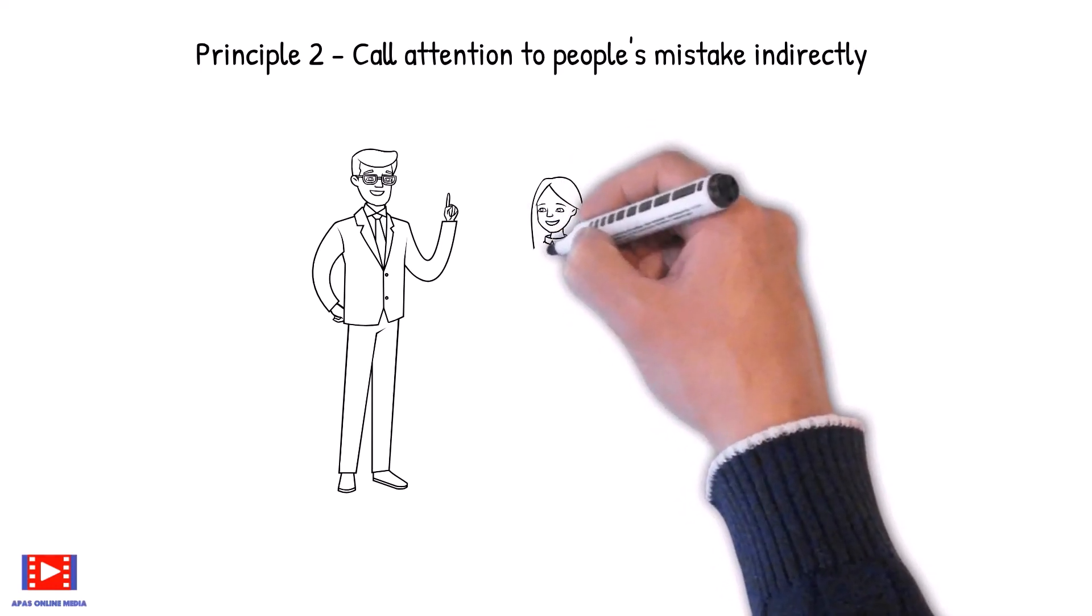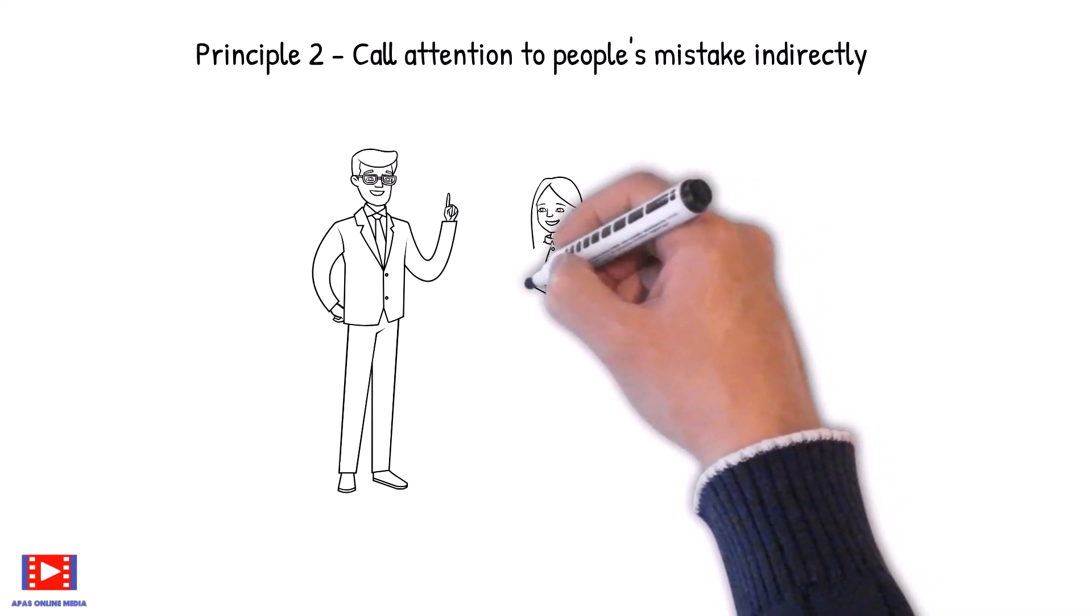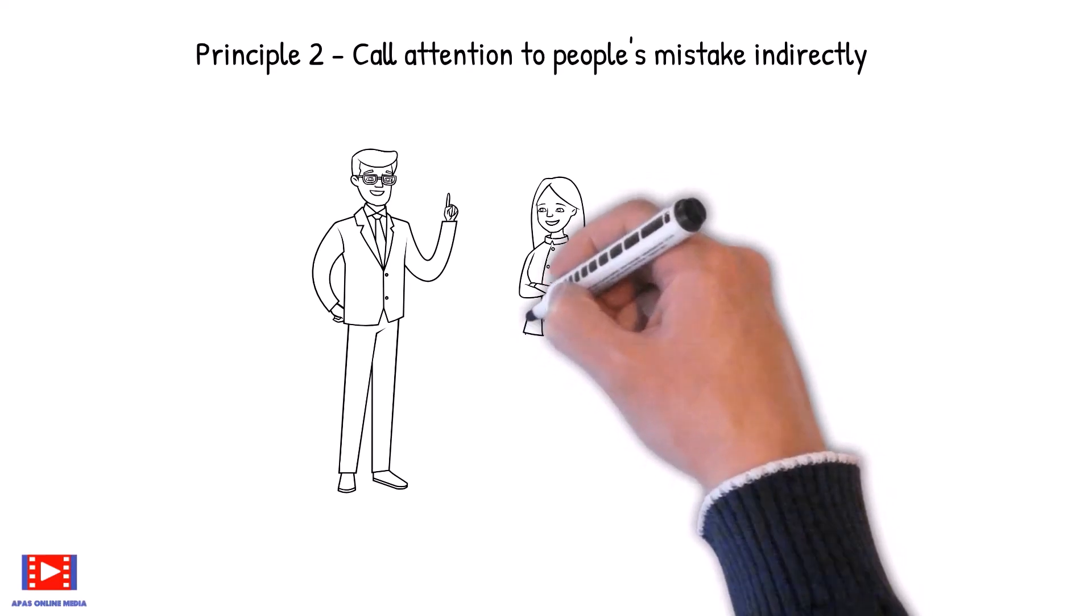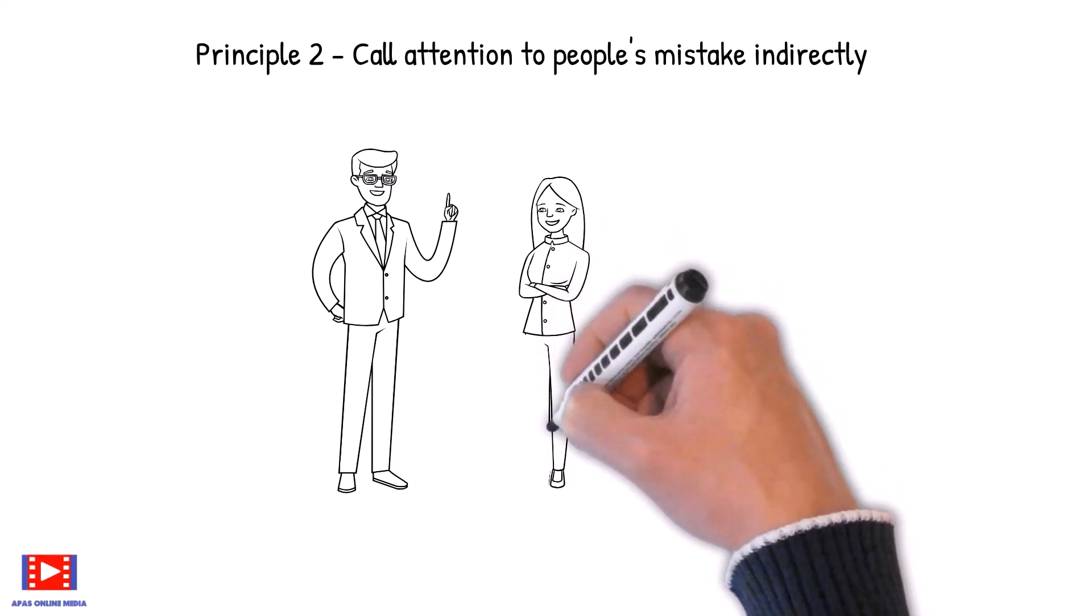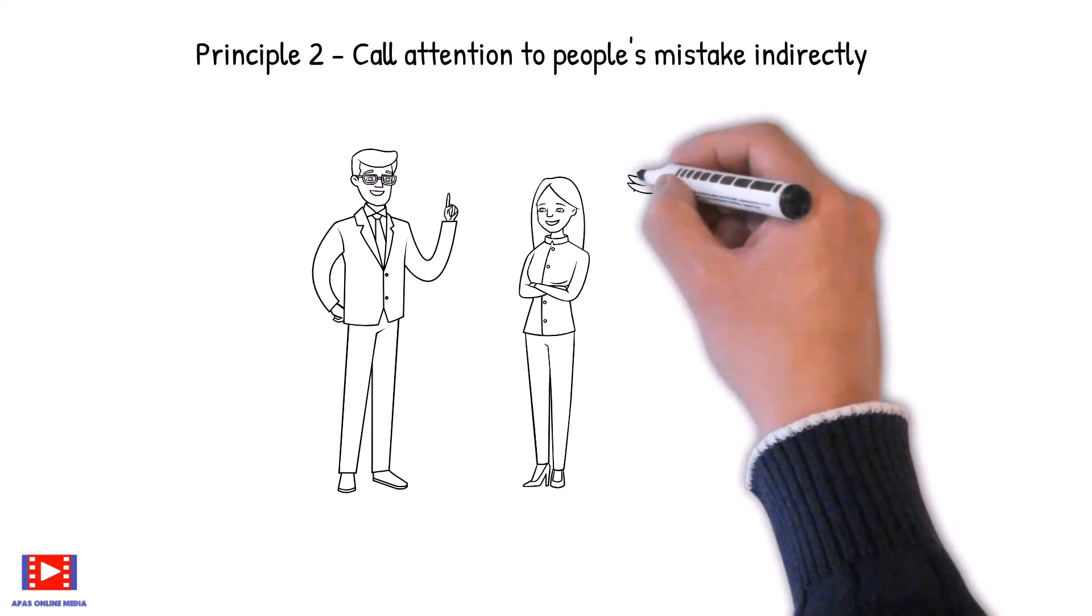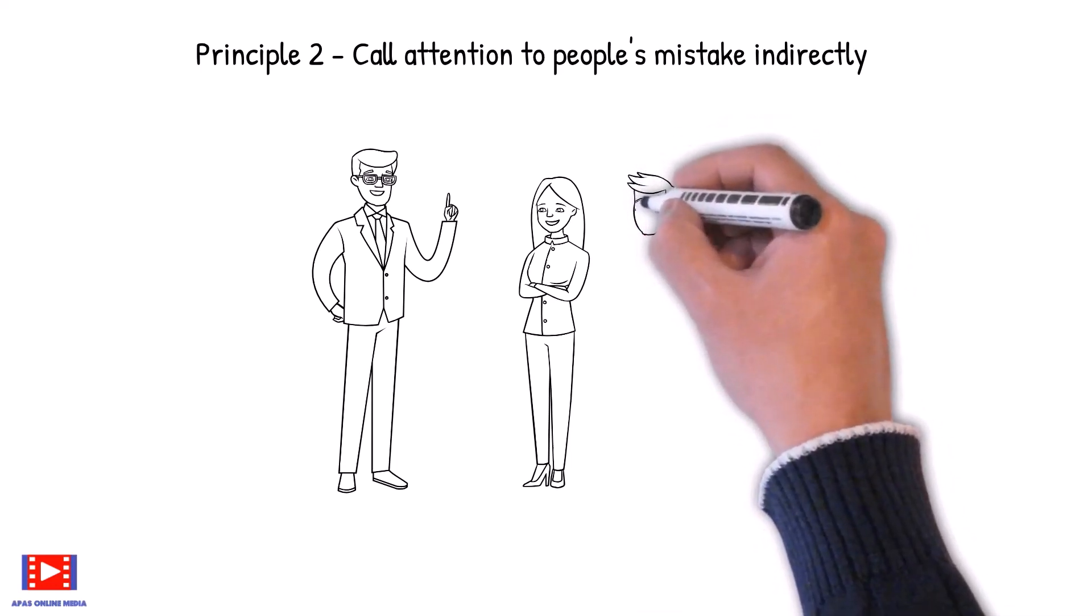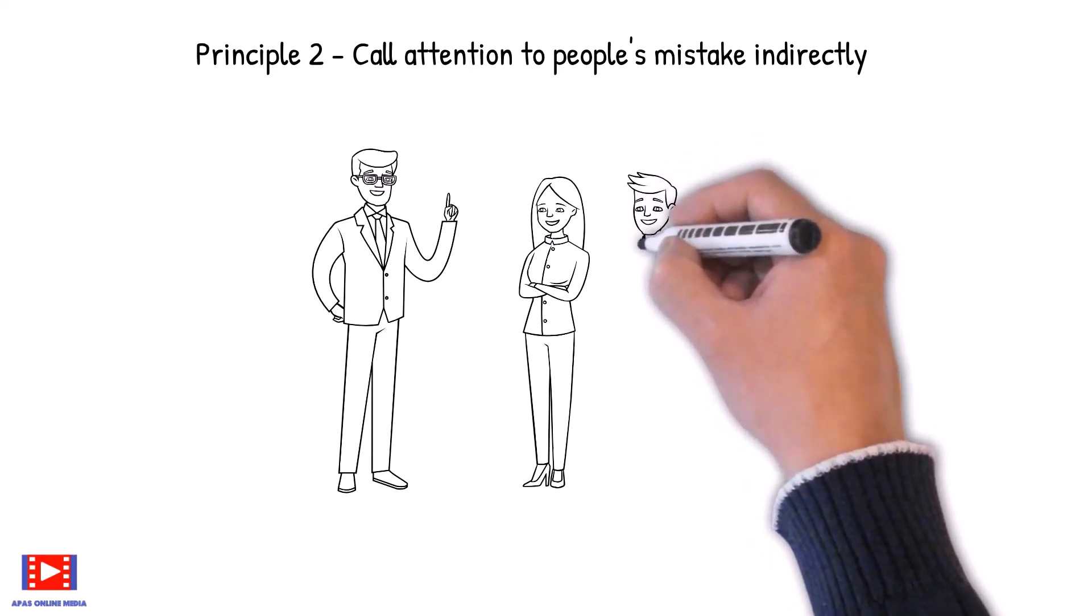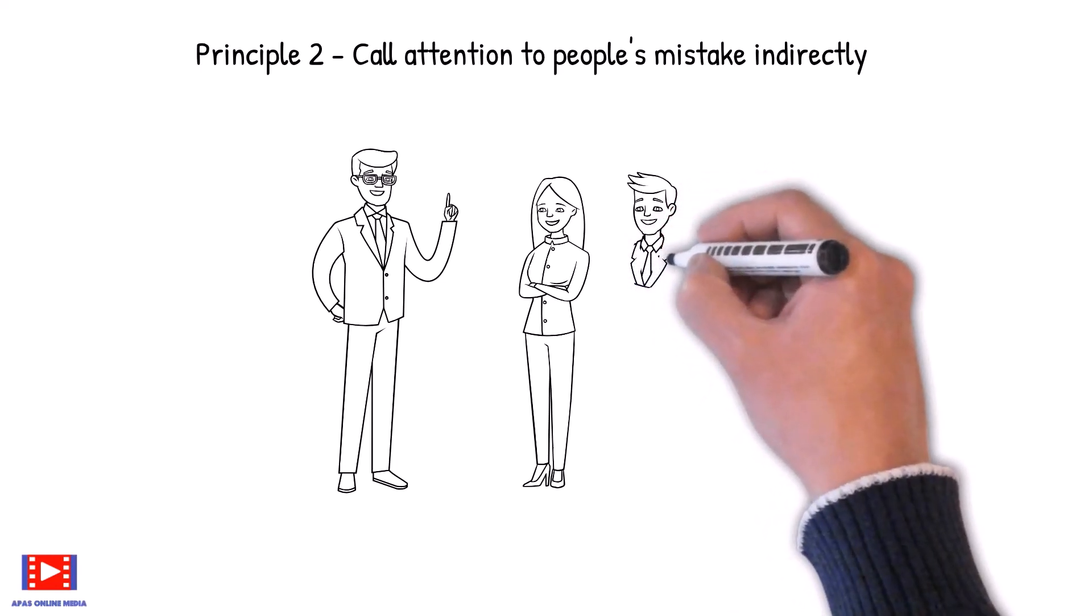In this case, Johnny might feel encouraged until he heard the word but. He might then question the sincerity of the original praise. To him, the praise seemed only to be a contrived lead into a critical inference of failure. Credibility would be strained and we would probably not achieve our objectives of changing Johnny's attitude towards studies.